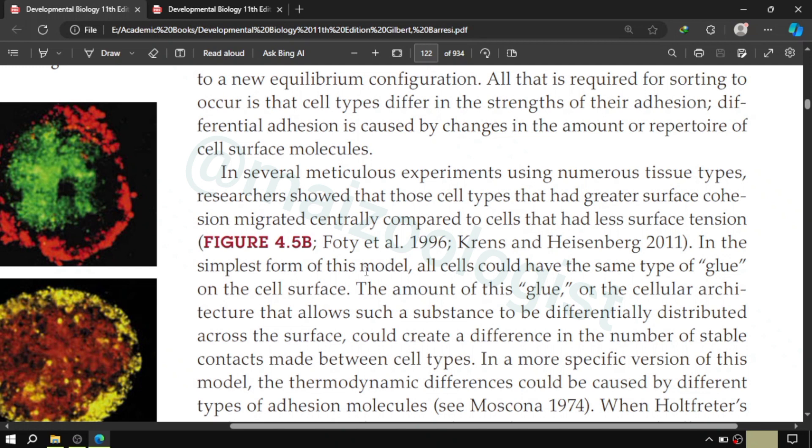In other words, in simplest form this model says that all cells could have the same type of glue on cell surface. Thus, only the amount of this glue, or the cellular architecture that allows such substances to be differentially distributed across the surface, this is what creates a difference in the number of stable contacts between different cell types and this is what causes the cells to move with respect to each other.